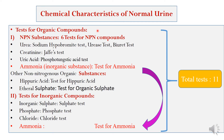Among the tests for organic compounds, we have some NPN substances which are urea, creatinine, uric acid, and ammonia. For urea, we do the sodium hypobromide test, urease test, and biuret test — so there are three tests in all that can be performed for urea.